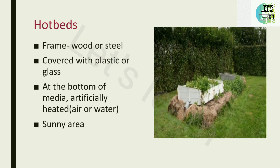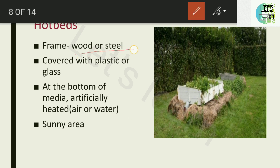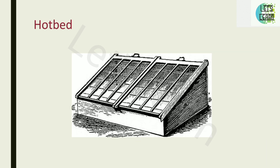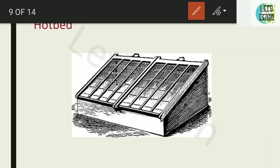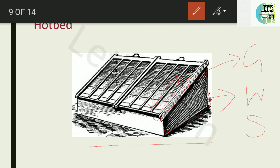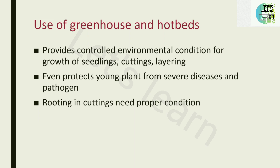Next, we will learn about hot beds. This is one kind of propagation structure. Its frame is made up of wood or steel and is covered with plastic or glass. The main feature is that at the bottom of the growing media, heat is applied artificially — either through air or water — creating a heating process. Hot beds are constructed in sunny areas and are used to produce artificial heat for plants.